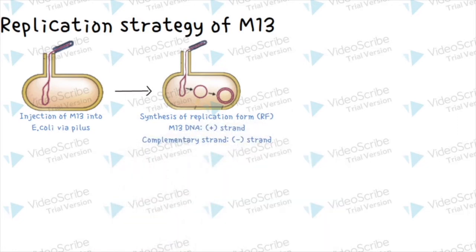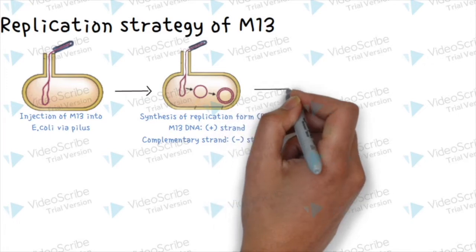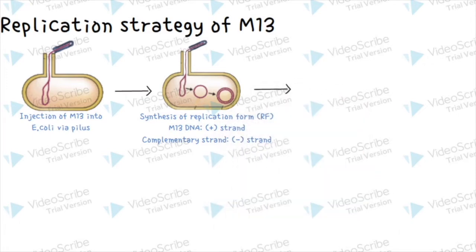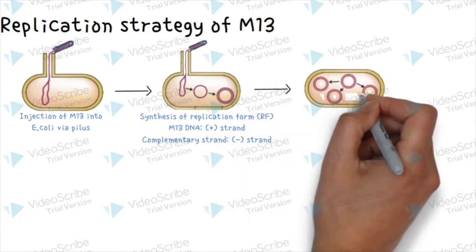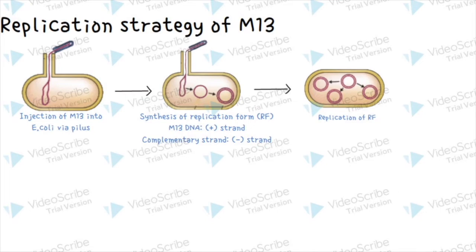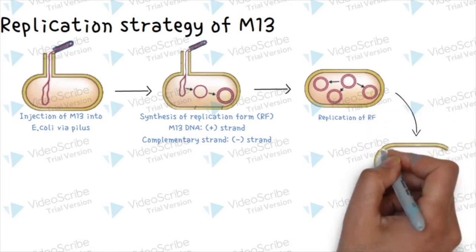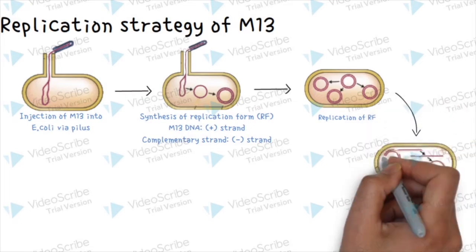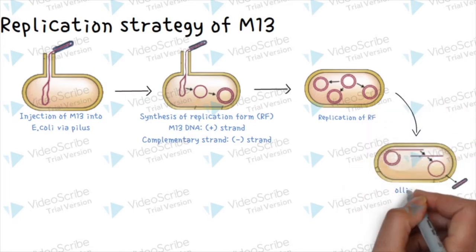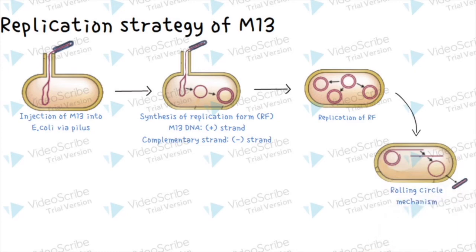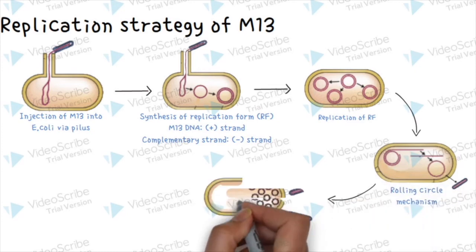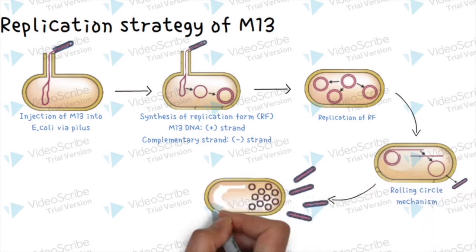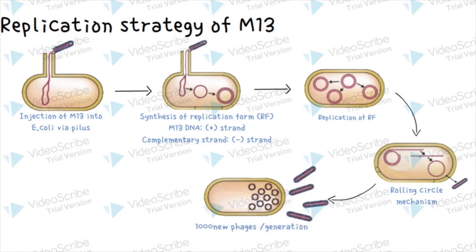The complementary strand produced is called the negative strand. After that, the RF replicates to produce multiple copies of itself inside the host. Then, RF may replicate by the rolling circle mechanism to produce linear single-stranded DNA. Eventually, new phage particles are continuously assembled and released, with about 1,000 new phages being produced during each generation of an infected cell.